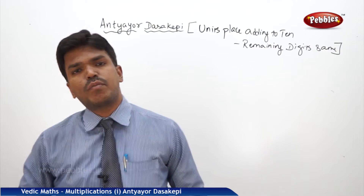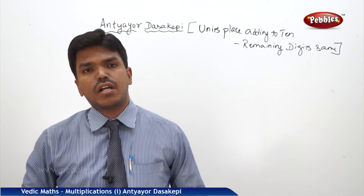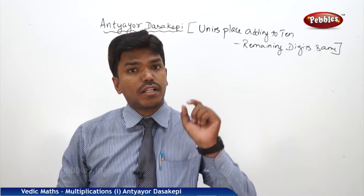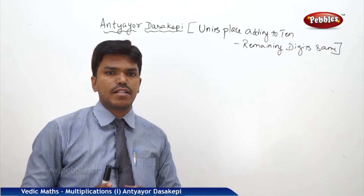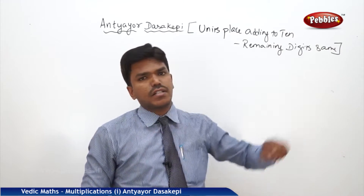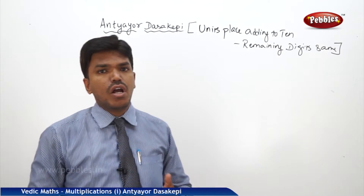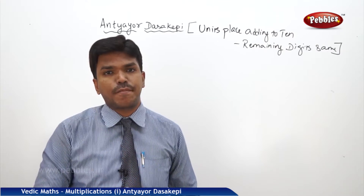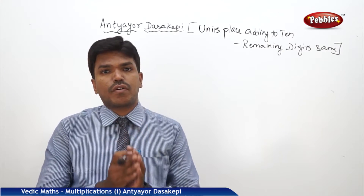In Vedic Maths, we are going to learn one more technique: Anteor Dasa Kp. Anteor Dasa Kp means the numbers which are summing up to 10 at the end — in other words, the units place digits add to 10 and the remaining digits are the same. If you want to multiply two numbers whose units place digits add to 10 and the remaining numbers are same, there is an easy way to find the product.